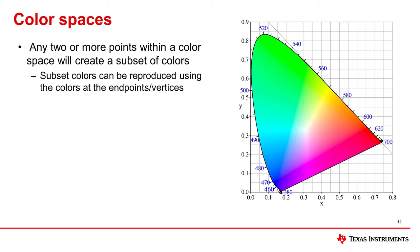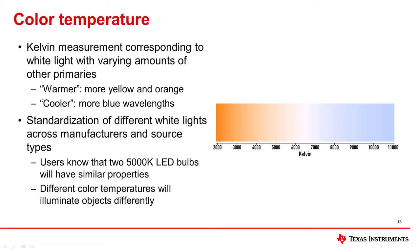Picking two points in the color space will create a line, with all of the colors along the line being made up of different amounts of the two endpoint colors.